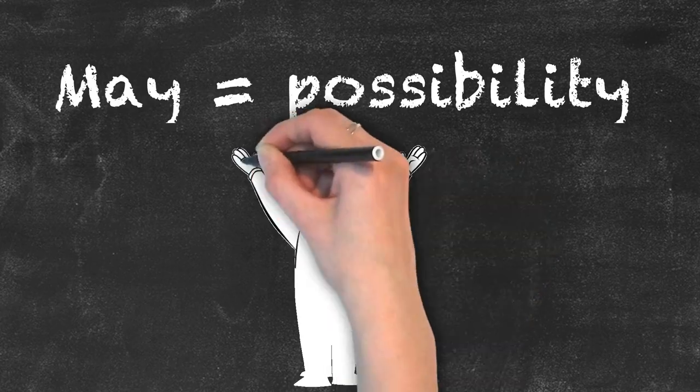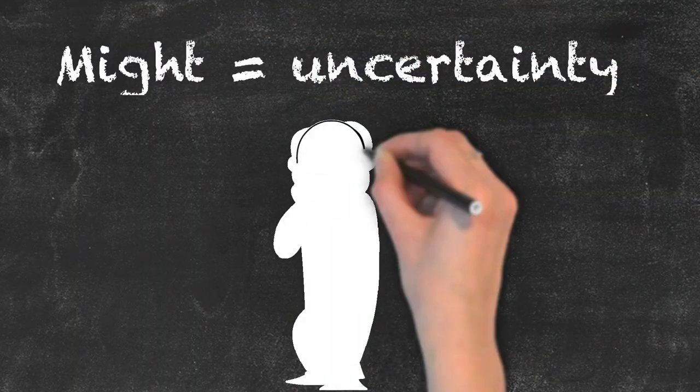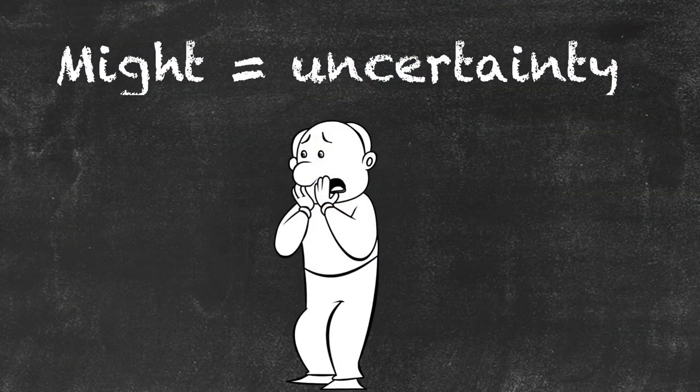May refers to a possibility and might conveys more uncertainty. Let's take a look at some examples.